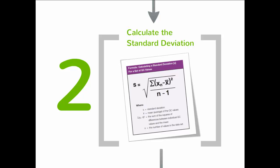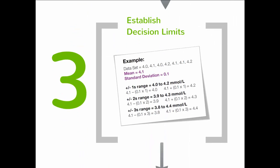Using the mean and standard deviation, the laboratory can establish decision limits. These limits are used to define what is considered an acceptable control result. Decision limits are established at plus or minus 1s, 2s, and 3s from the mean.